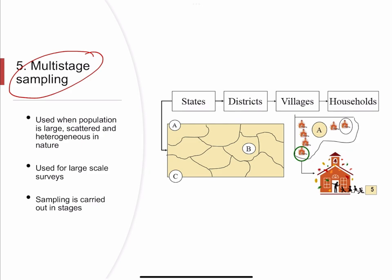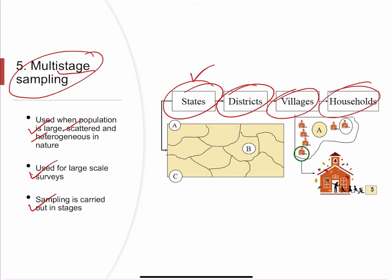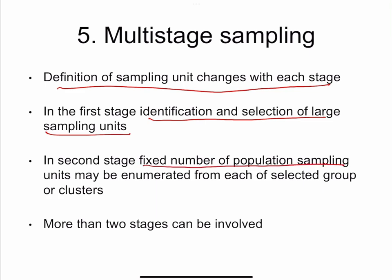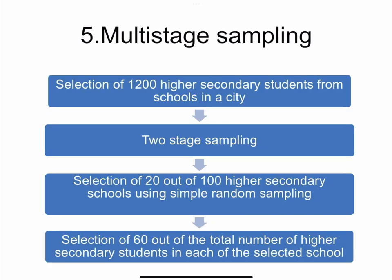The next probability sampling method is multi-stage sampling, which is different from multi-phasic sampling. Multi-stage sampling is used when the population is large, scattered, and heterogeneous in nature — used for large-scale surveys. Sampling is carried out in stages: we select some states, then districts, then villages, then households. At each stage the selection may follow a different method — systematic sampling, simple random sampling, cluster sampling, or stratified random sampling. If more than one sampling method is used at different levels, that is called multi-stage sampling. The definition of the sampling unit changes with each stage.